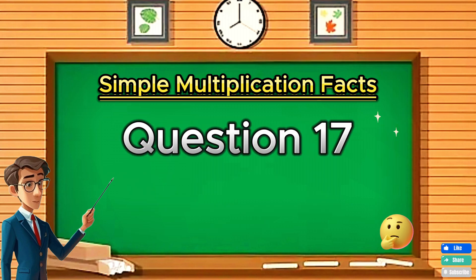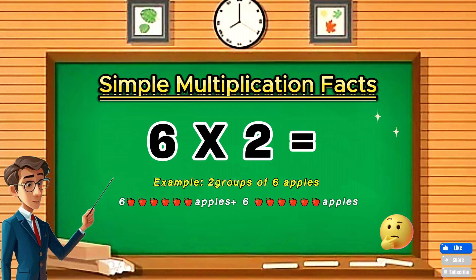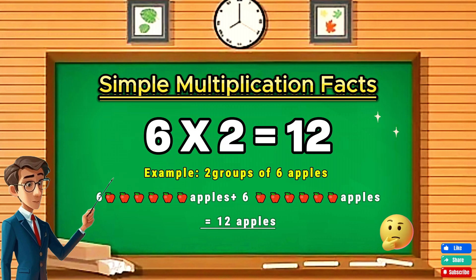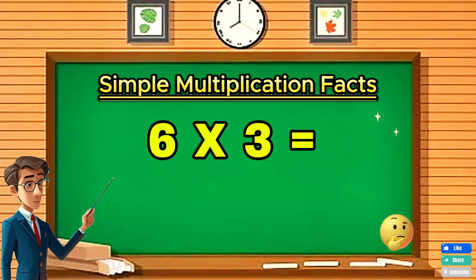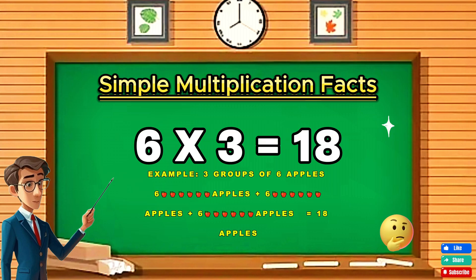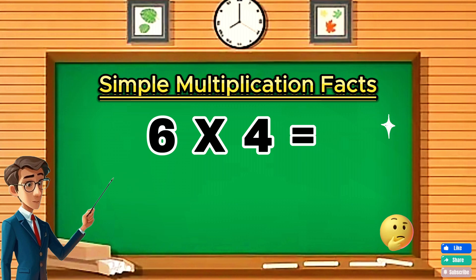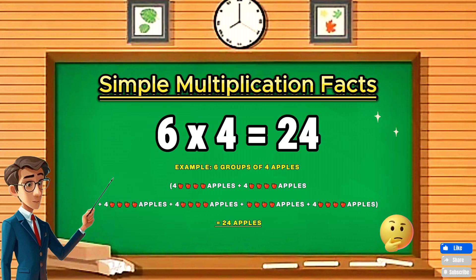Question seventeen: Six times two equals twelve. Question eighteen: Six times three equals eighteen. Question nineteen: Six times four equals twenty-four.